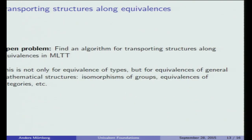One problem is that if you add an axiom like this to Martin-Löf type theory, there are things you cannot compute. So we want to find an algorithm for transporting structures inside type theory — a computational interpretation of the Univalence Axiom so it becomes computable. This is not easy because you have to do it not only for equivalence of types but for equivalence of general mathematical structures, like isomorphisms of groups or equivalence of categories and higher categories.